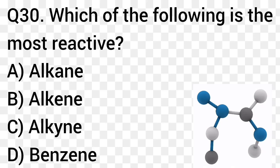Question number 30. Which of the following is the most reactive? Option A: Alkane. Option B: Alkene. Option C: Alkyne. Option D: Benzene. The right answer is option C, Alkyne.